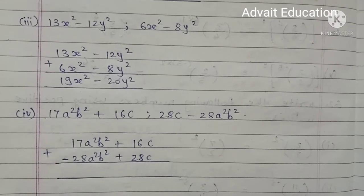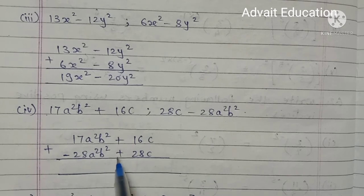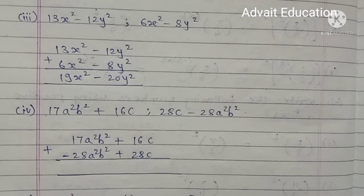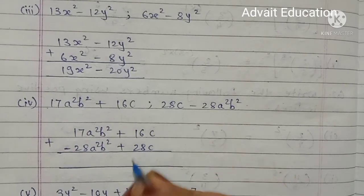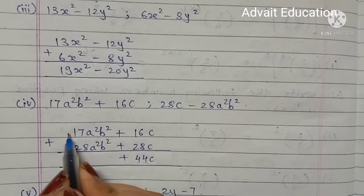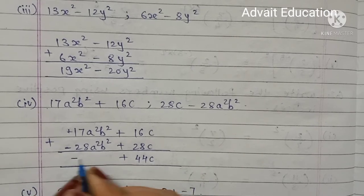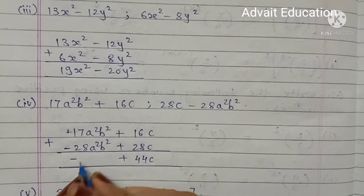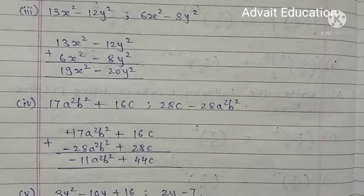Fourth problem: 17a²b² plus 16c minus 28a²b² plus 28c. 16c plus 28c equals 44c. Plus minus minus, sign of bigger number: 28 has minus sign, so 28 minus 17 equals 11a²b². Your answer is minus 11a²b² plus 44c.